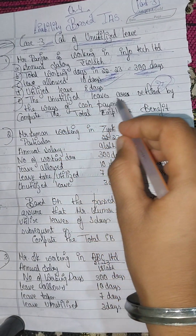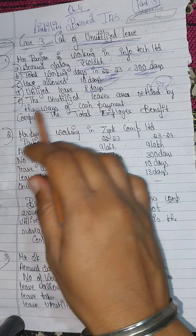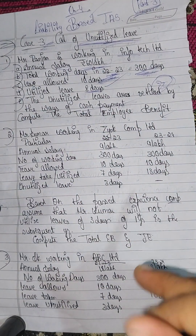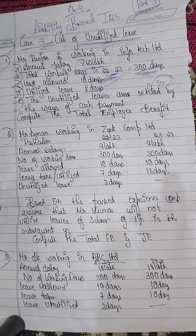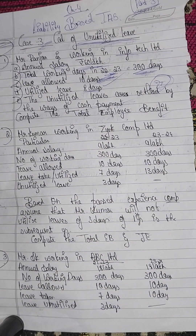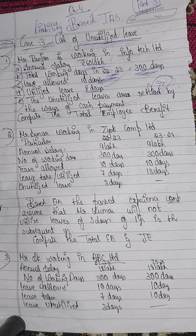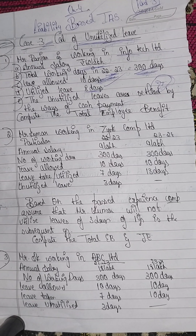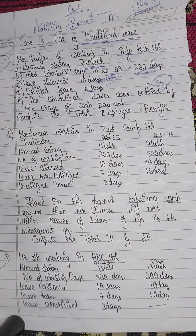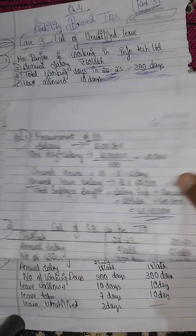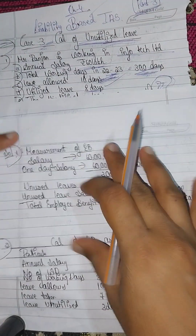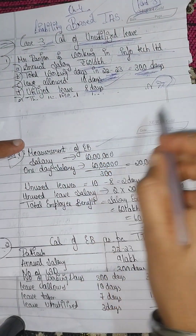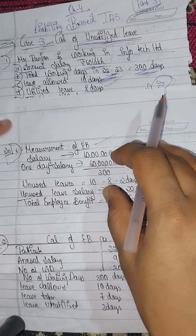The unutilized leave is settled by way of cash payment. The cash payment is settled in the case of this problem. We have to solve this direct problem — Problem Number 1 — which is the measurement of employee benefits.